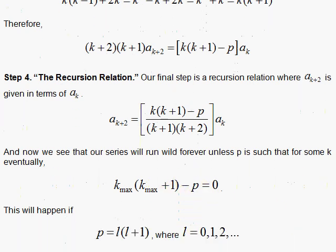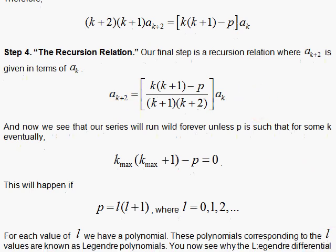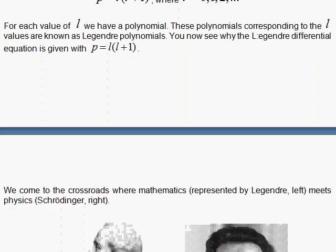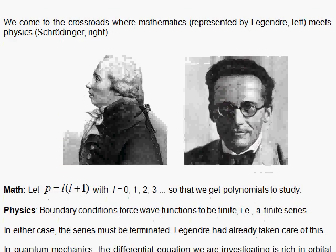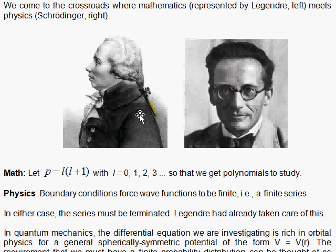Well, that will happen if p is some l times the quantity l plus 1. So in other words, looking just like this, then when k reaches l, the game is over and the series terminates. So this can be looked at from two perspectives. One is the mathematician perspective. The mathematician here is Legendre. And that is to do this kind of a definition so you get cute polynomials and you can investigate them.